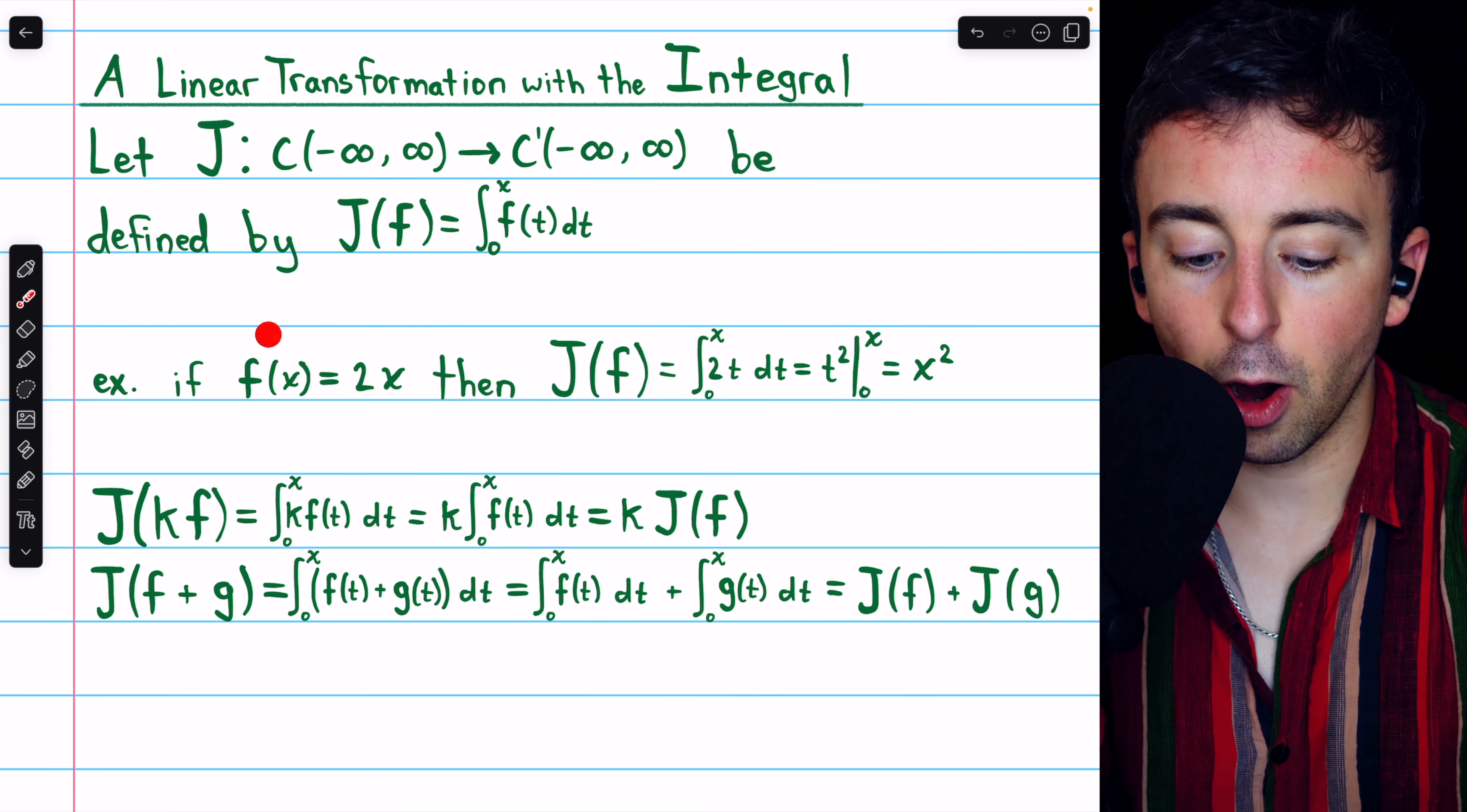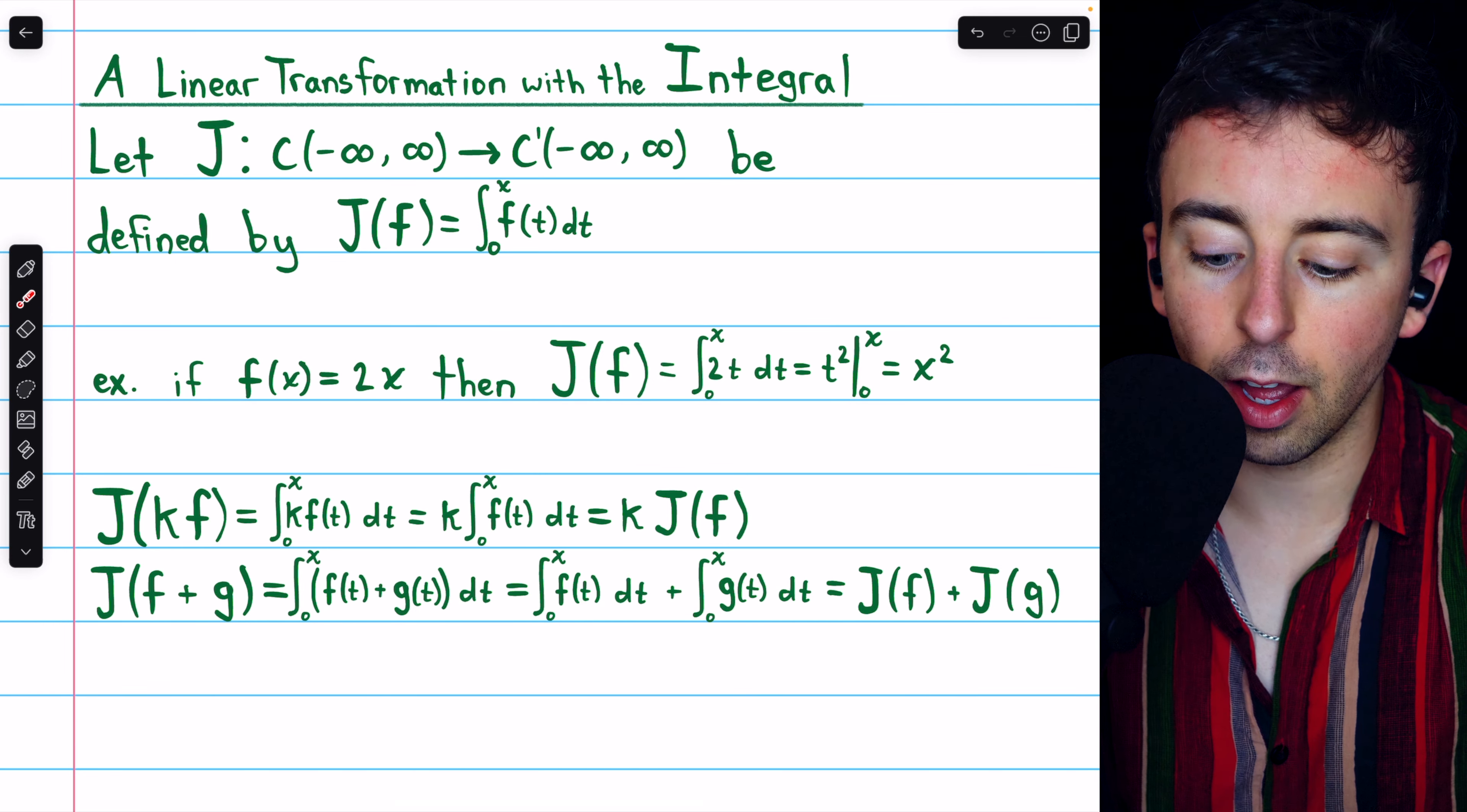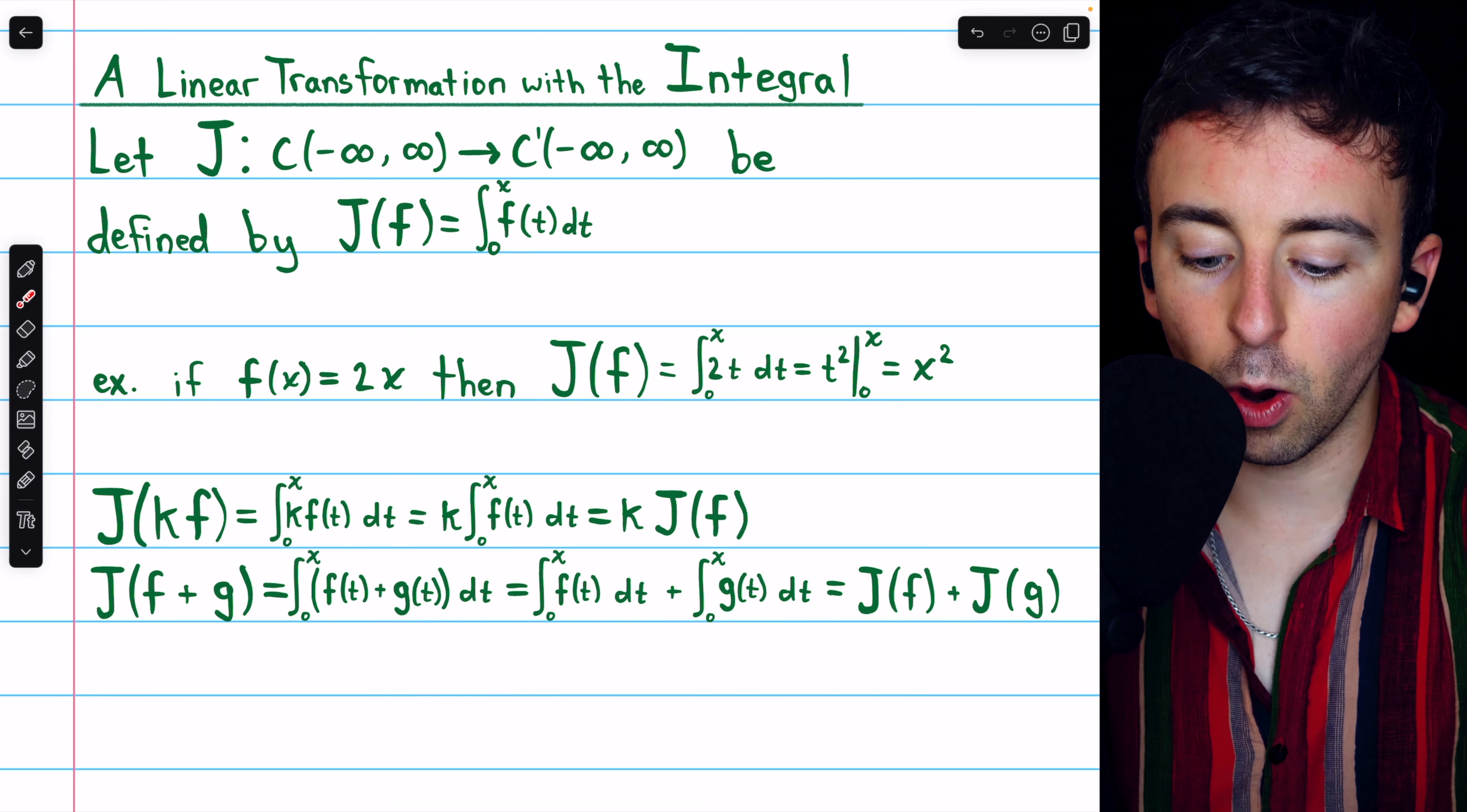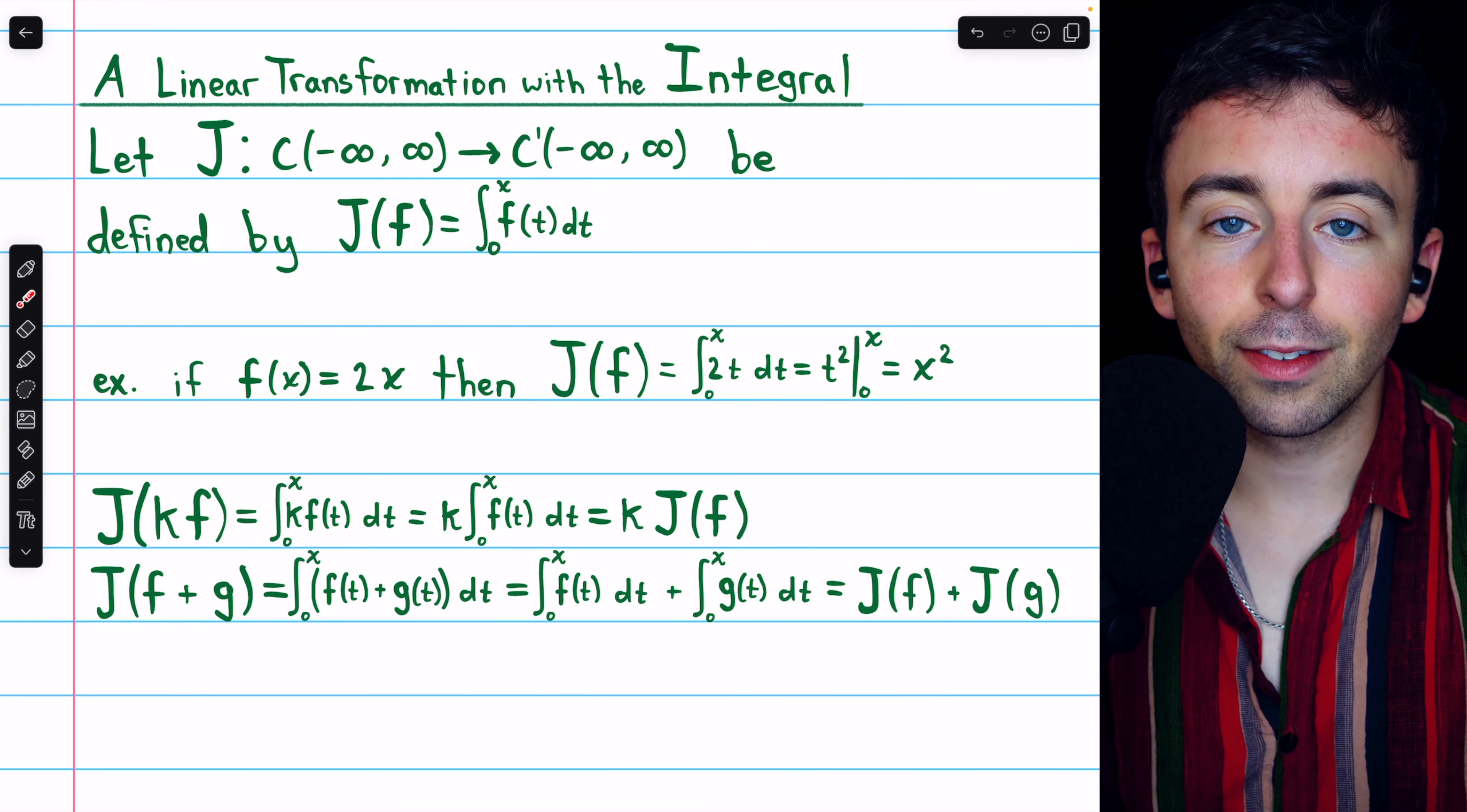For example, if our input function f is 2x, then J of f is going to be the integral of 2t dt from 0 to x. Performing the integration as usual, this is x squared.